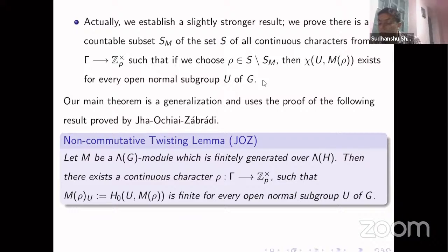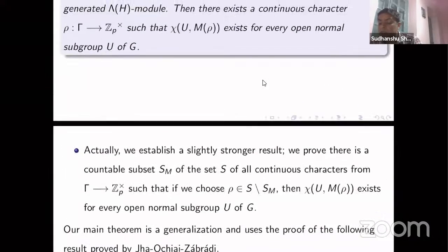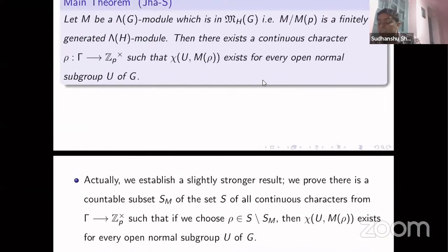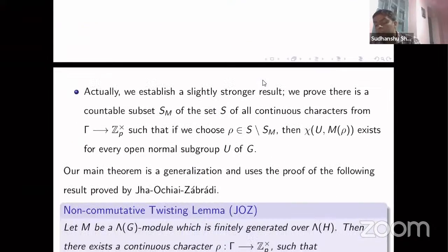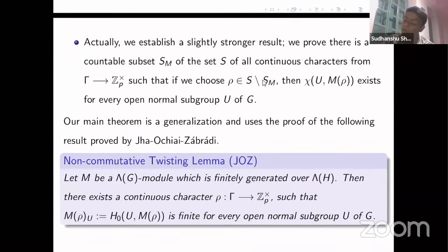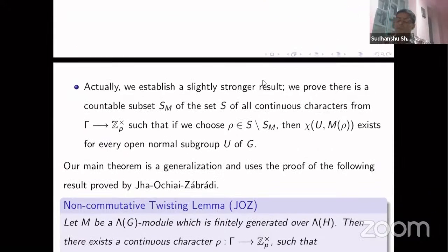In a way, this main theorem on existence of Euler characteristics is a generalization of, and we also use, a lemma by Jha, Ochiai, and Zabradi. Their lemma shows that H_0 is finite under the assumption that M is in MH(G) — that is something very crucial for us. The issue is that for a general group, showing all H_i are finite and vanish after some stage requires more than just finiteness of H_0.